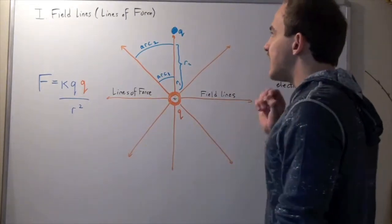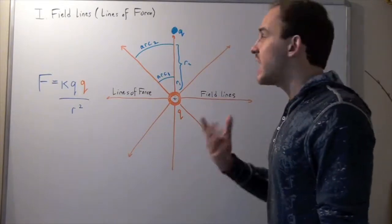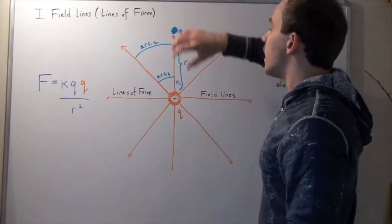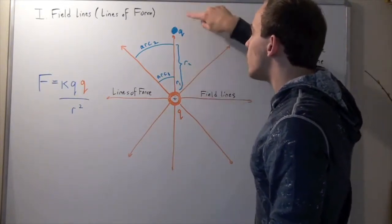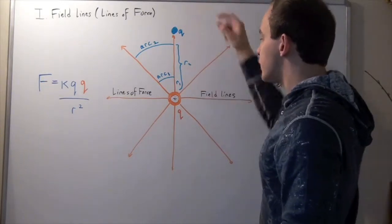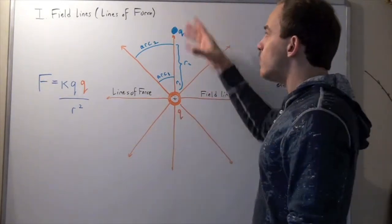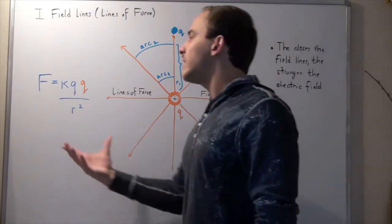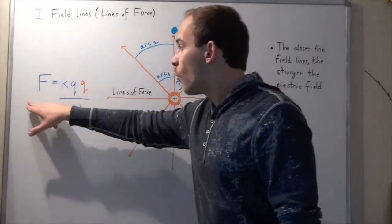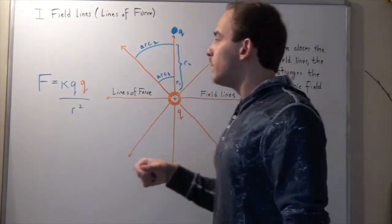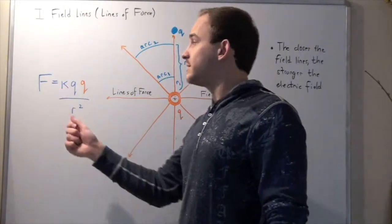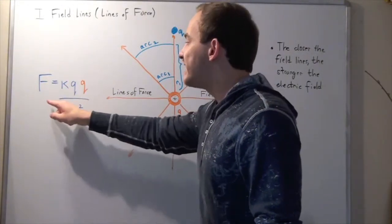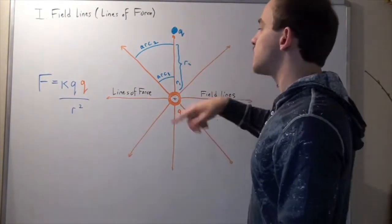And we said that if we place another charge, say a positive charge, some distance R away from this charge, that they will feel a force given by Coulomb's law. So the force that each guy feels will be given by K, the constant, times each charge divided by the distance between them squared.